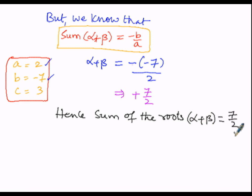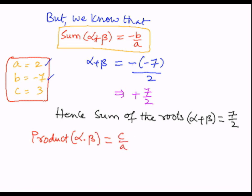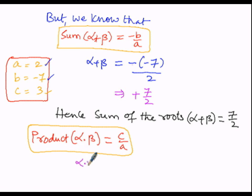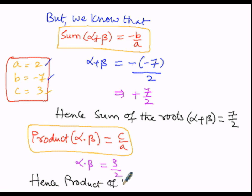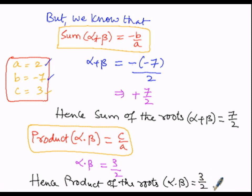Now we find the product of the roots. We know that alpha into beta = c by a. Substituting the values, alpha into beta = 3 divided by 2. Hence, the product of the roots, alpha into beta, is equal to 3 by 2.